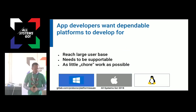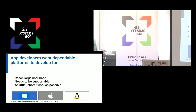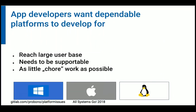What does an app developer need? A developer wants to reach a large user base, wants it to be supportable, and wants as little work as possible to distribute applications. An application developer is looking for a dependable, stable platform. Windows is one such platform — if you develop something for Windows XP over a decade ago, it ran and ran and still runs on subsequent versions. Very similar for Mac. For Linux, it's a different story.